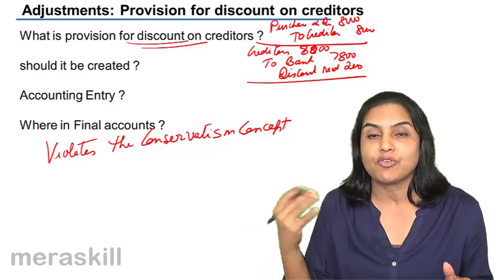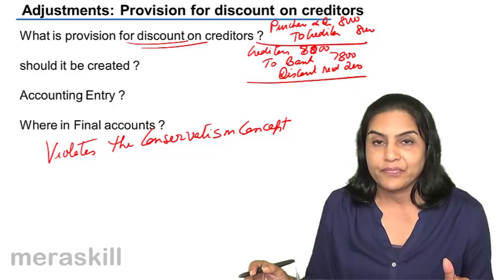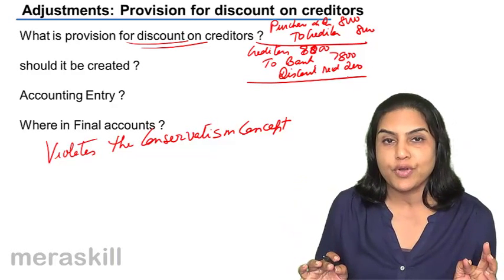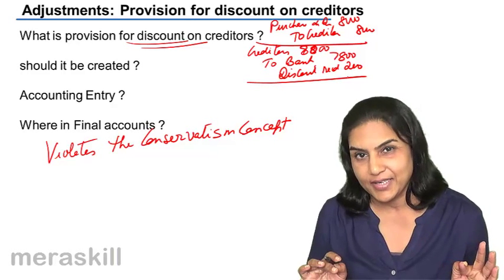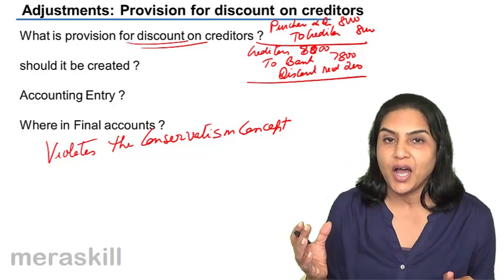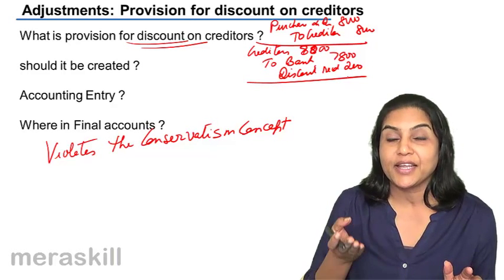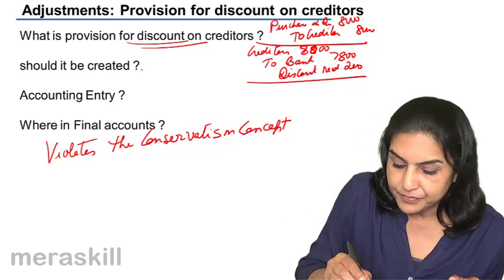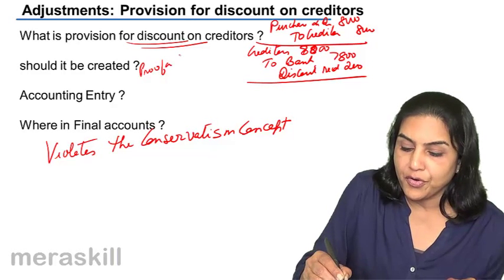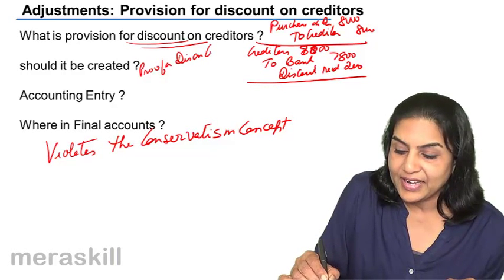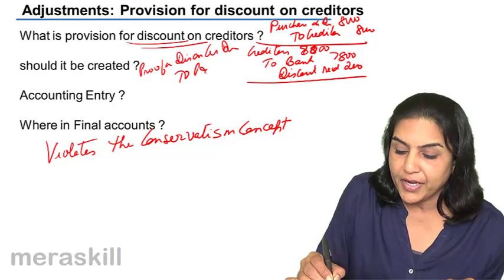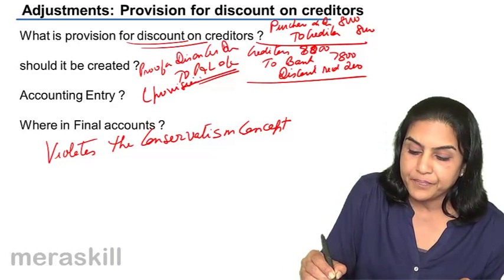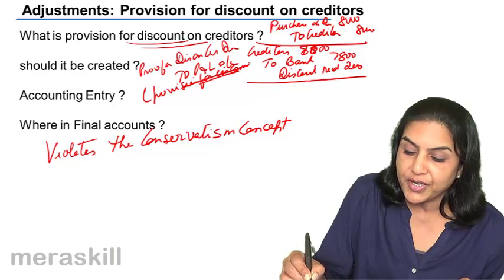Since we expect that this discount received will be earned in the next year, there is a concept that, just like we have a provision for discount on debtors, let us also have a provision for discount on creditors. This means we are making a provision that inflates the profits for the current year. The entry for this is: provision for discount on creditors debit to profit and loss account — so profit and loss account is credited. This is a provision for future income.